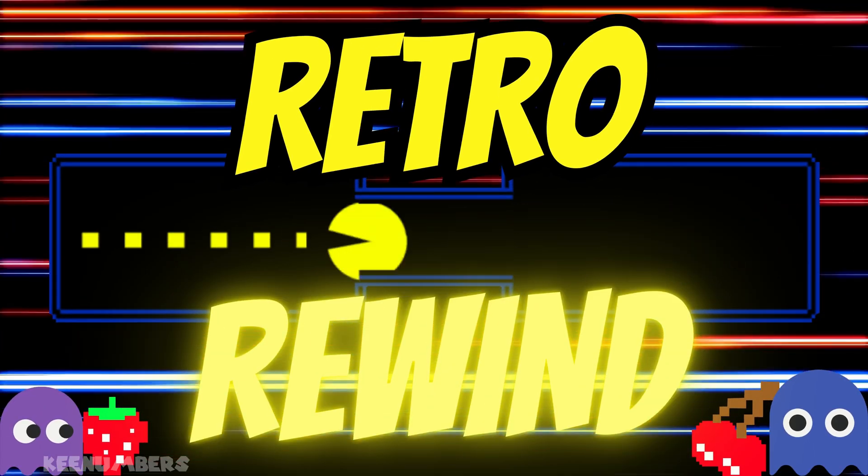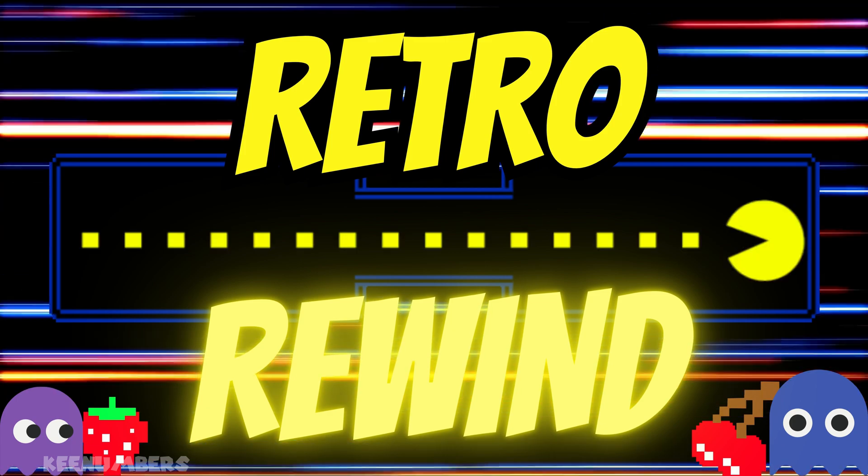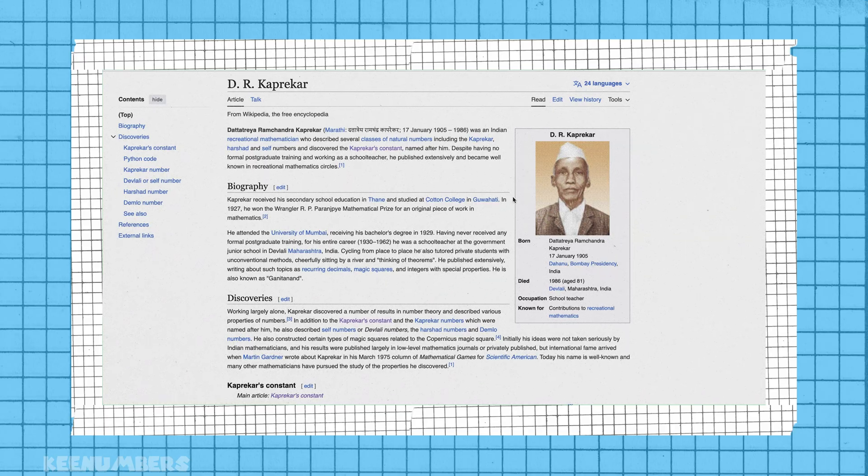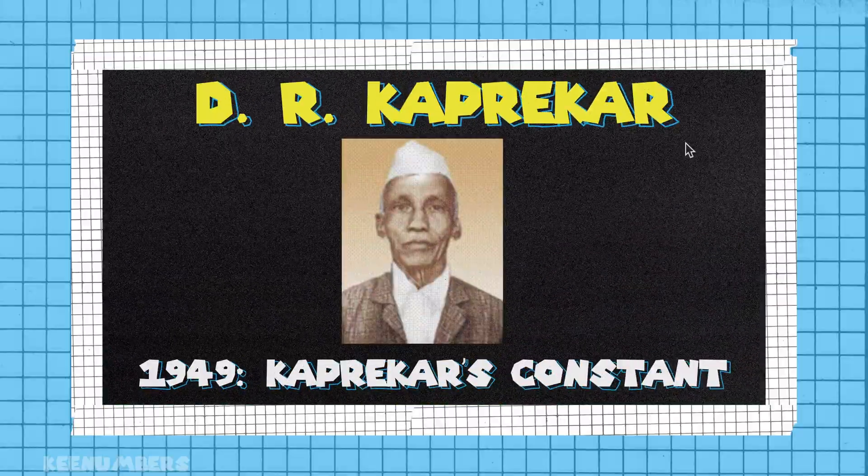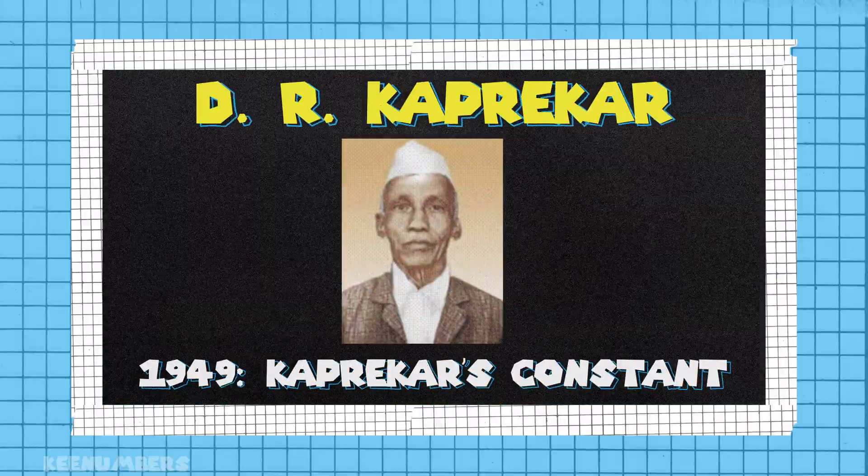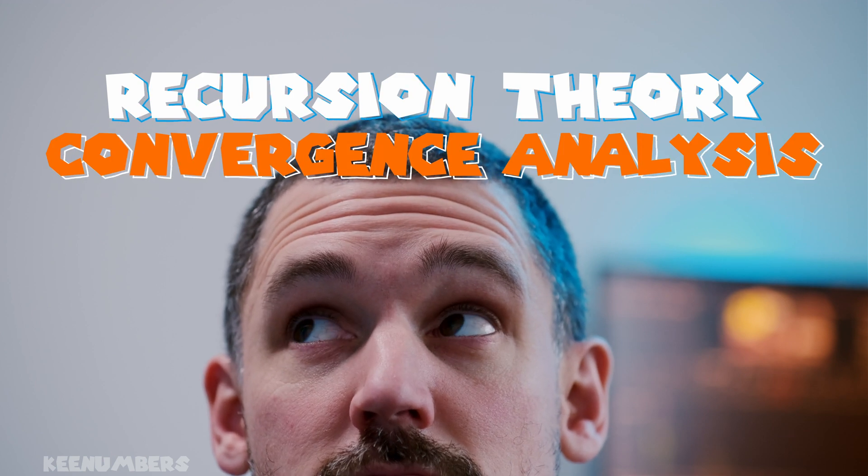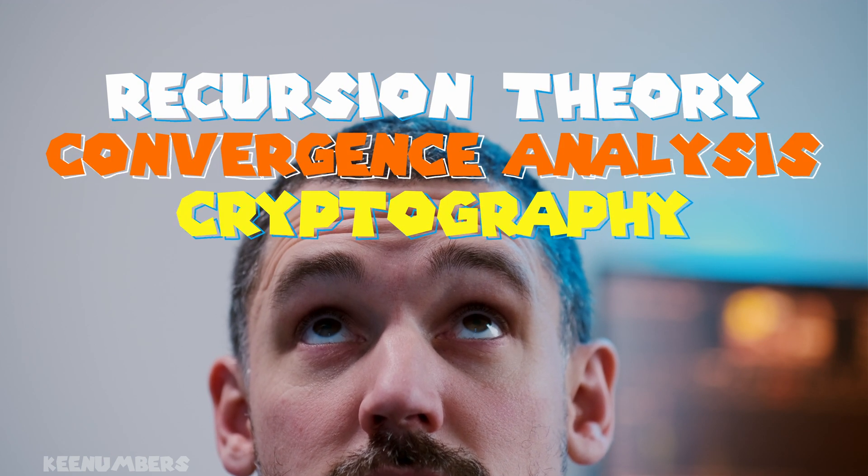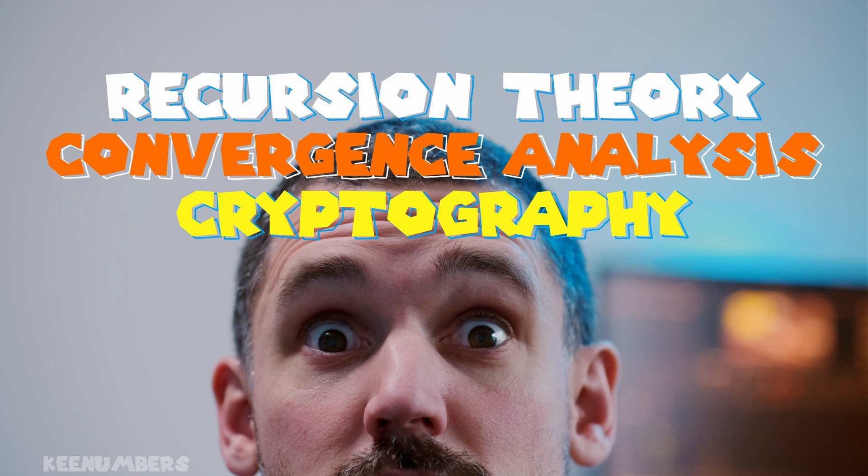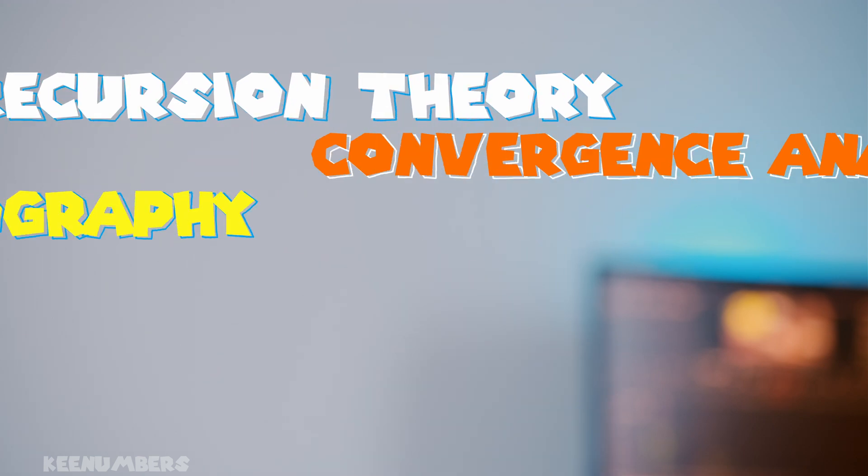So who came up with this number? An Indian mathematician by the name of D. R. Kaprekar, who in 1949 realized there's something really cool about 6,147. His constant has applications in advanced subjects like recursion theory, convergence analysis, and cryptography, all of which are beyond me. But you math champs can get into later in life.